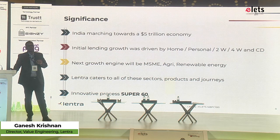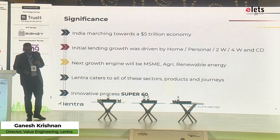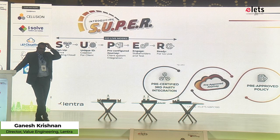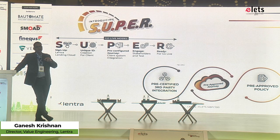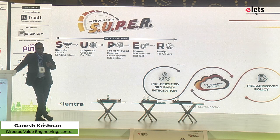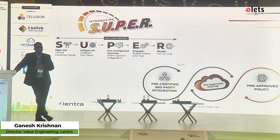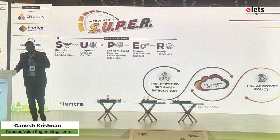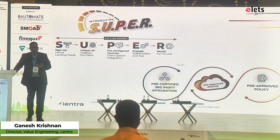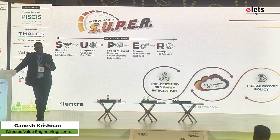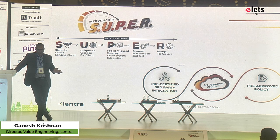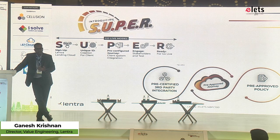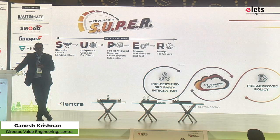One main reason we are able to do this is our innovative process called Super 60. What is Super 60? We pre-configure all the journeys. A journey could be, for example, for a personal loan — it could be for an E2B customer, N2B customer, N2C customer, or it could be salaried, self-employed, or any other. In a combination of all these, we pre-configure the journey, all the credit policies which are pre-approved or configured in the journey, and the third-party interface connections are all pre-available and tested. All you have to do as a lender is sign up with us — we create a unique ID for you, roll out this pre-configured journey, and you would be able to start testing immediately, so that you can go live in flat 60 days, reducing your go-to-market time.